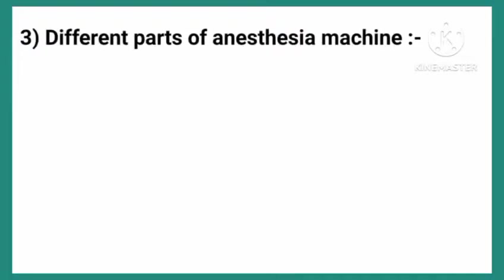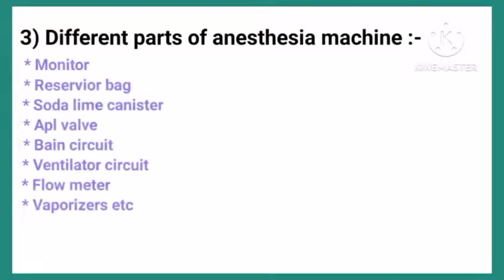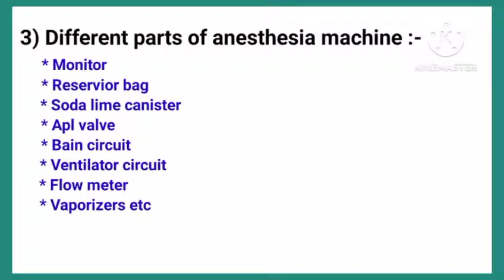Different parts of the anesthesia machine include: monitor, reservoir bag, soda lime canister, APL valve, Bain circuit, ventilator circuit, flow meter, vaporizers, etc.